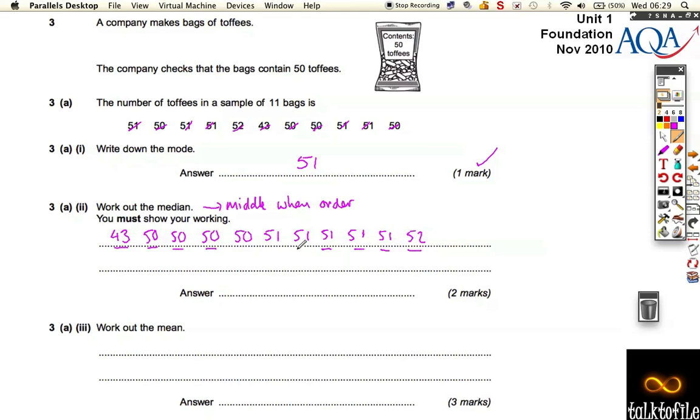So cross that one, and I'm left with just one number in the middle. So that's the middle number, the median must be 51 as well. You get one mark for putting them into order correctly, and then one mark for finding the middle.